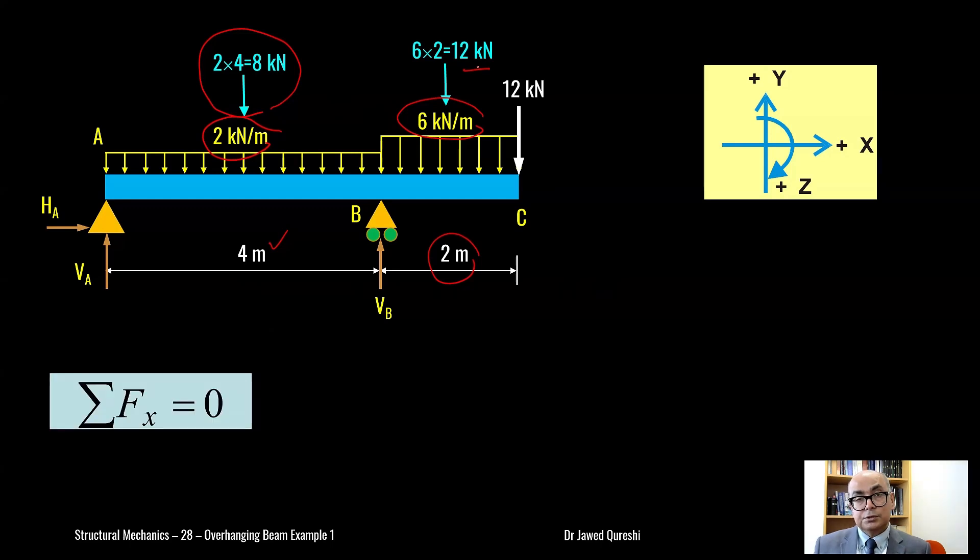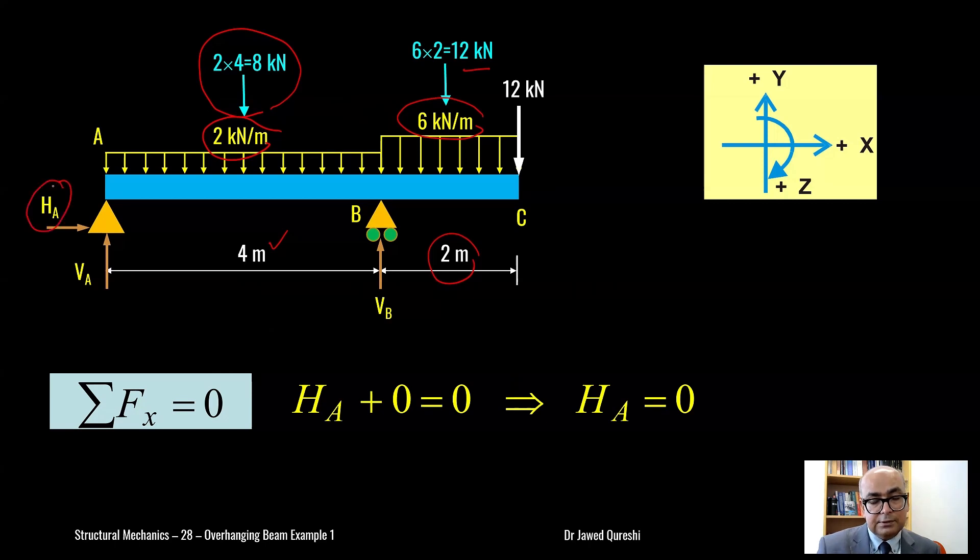First, let's use summation of horizontal forces equal to zero. As I only have horizontal reaction here, there are no horizontal loads applied here. So when you don't have horizontal loads, obviously the reaction is going to be zero. That's why the reaction is zero here.